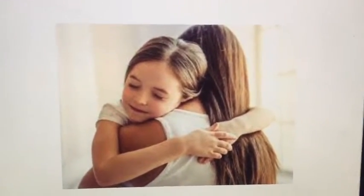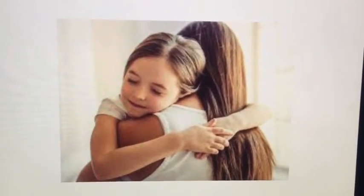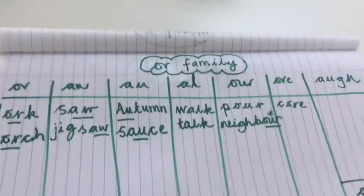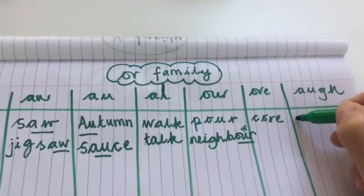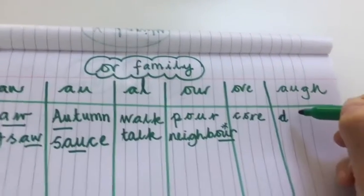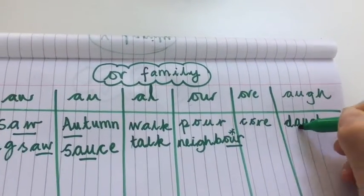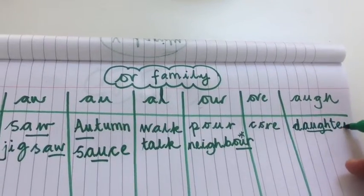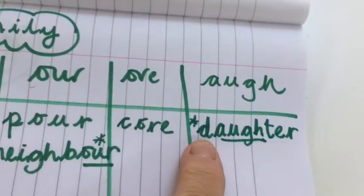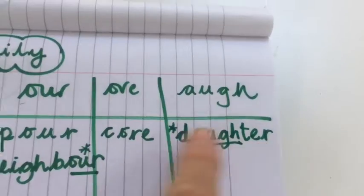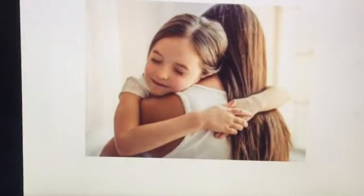This mum is giving her daughter a hug — d-augh-ter, daughter. It's going to be one of our challenge words today, and it goes in this column. We use three letters for the 'or' sound here: 'augh.' So it's d-augh-ter, daughter. I'm going to put a little star by that word because it is a tricky one — definitely one of our challenge words.